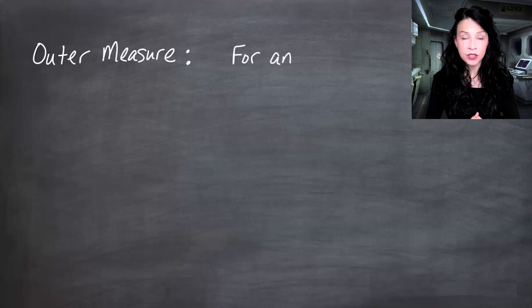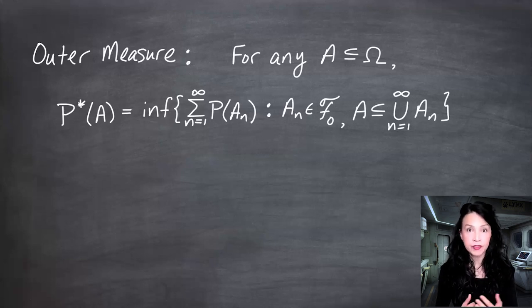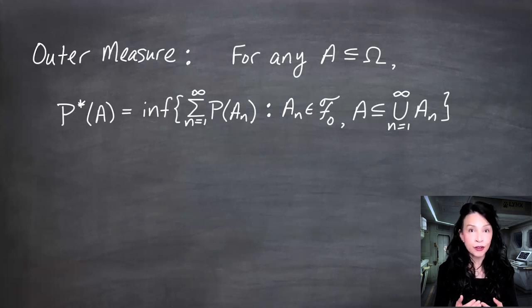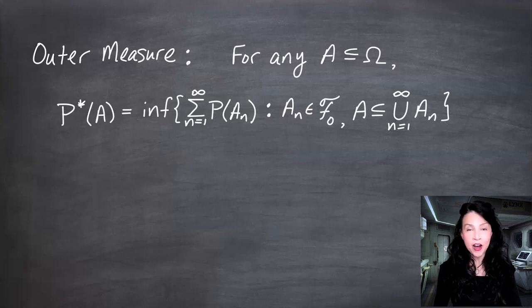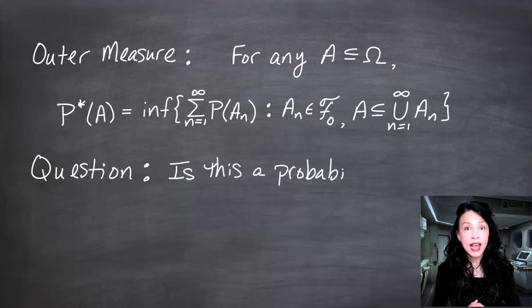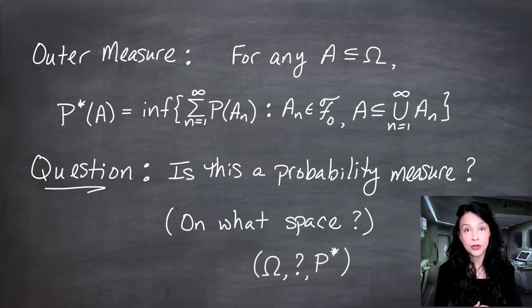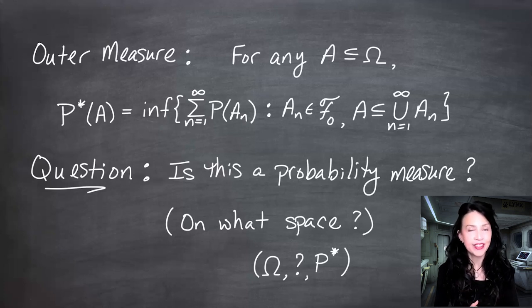For any subset A of omega, P-star of A is defined to be the infimum — essentially a minimum — of the sum of the individual probability measures of sets A_n, where the A_ns come from F-naught and cover A in the sense that A is contained in the union of the A_ns. I'm using leading terminology by calling this an outer measure because I don't know yet if this is a measure, and if it is, whether it's a probability measure. You don't really talk about a measure until you have a measurable space, consisting of a non-empty set omega and some sigma field. So is this a probability measure, and if so, with respect to what sigma field? I'm hoping it will be the sigma field F generated by F-naught.